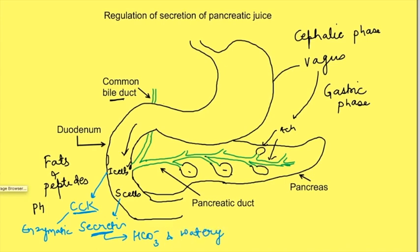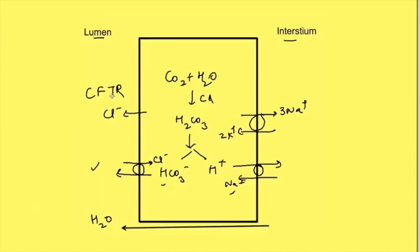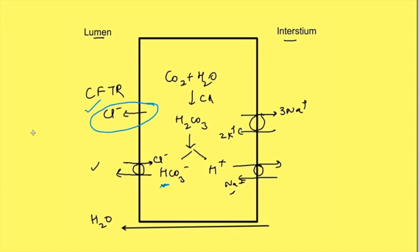Secretin acts on duct cells and increases the conductance of the chloride channel, because only when chloride is available in the lumen can bicarbonate be secreted by the bicarbonate exchanger. In a disease known as cystic fibrosis, mutations of this channel occur and there is a decrease in watery and bicarbonate secretion from the pancreatic gland.